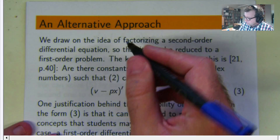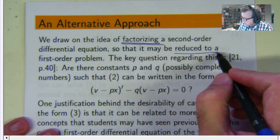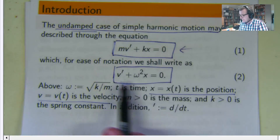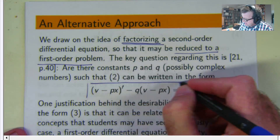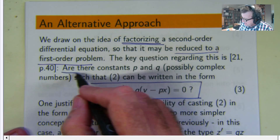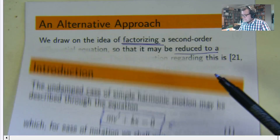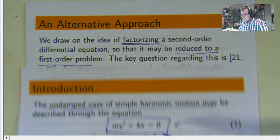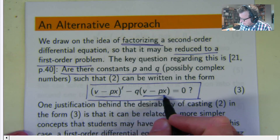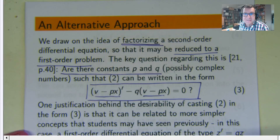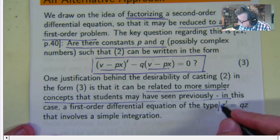The basic idea I'm going to draw on is called the method of factorizing or factoring. The idea is to reduce this problem down to a different form. The big question in my method is: are there constants P and Q such that you can write this differential equation in this form? You're probably saying, well, this looks much simpler. And I agree — but what you can do is make a substitution to get a simple first order differential equation. The idea is to relate it to a simpler first order differential equation.